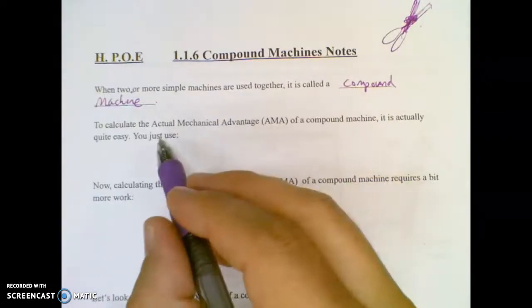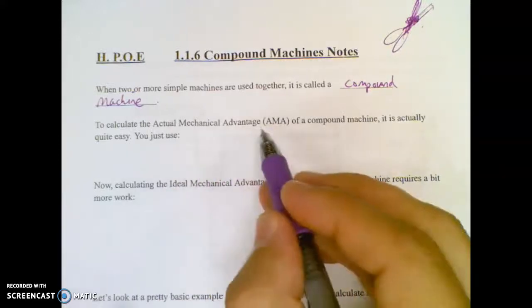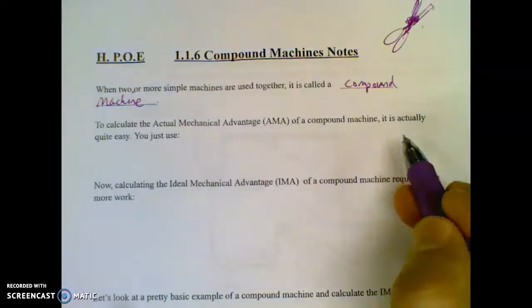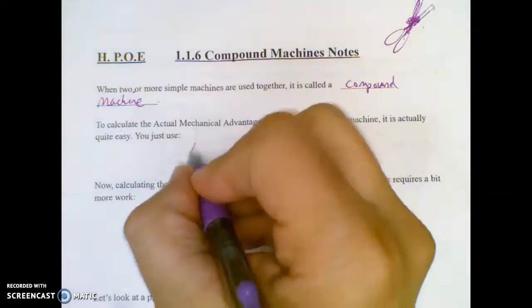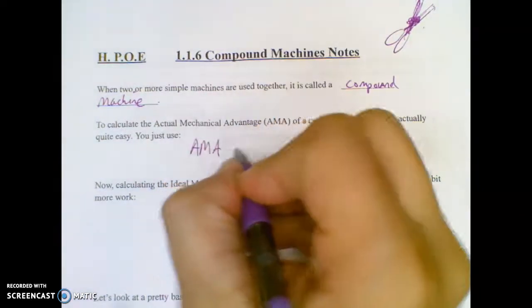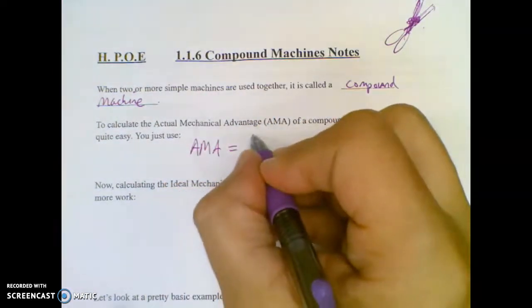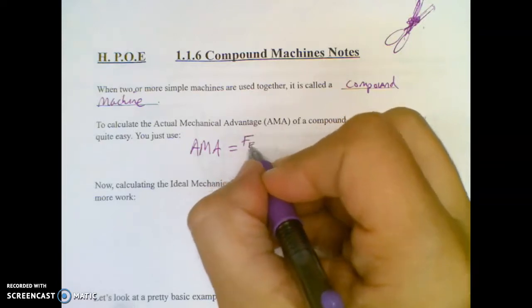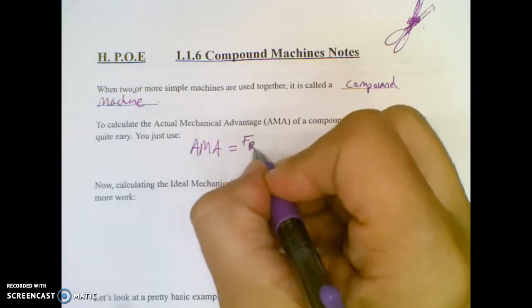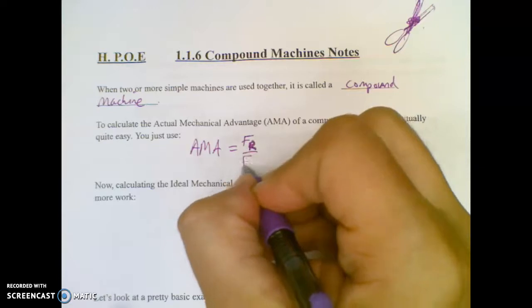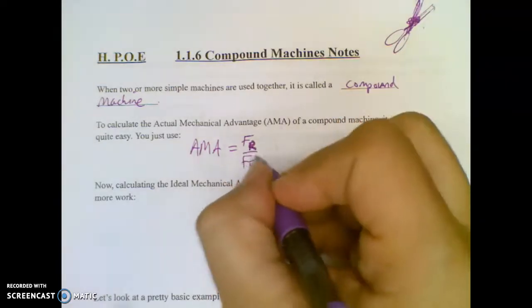To calculate Actual Mechanical Advantage of a compound machine, it's pretty easy. You just use the normal formula. AMA equals force resistance over force effort.